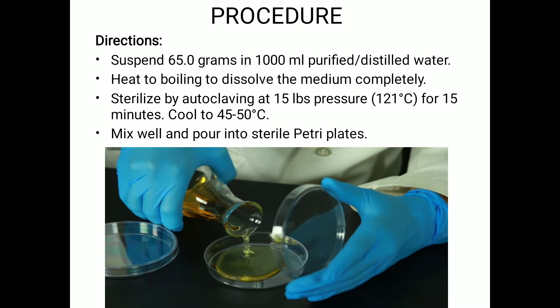We need to suspend 65 grams in 1000 ml of purified distilled water. It's not necessary to prepare exactly 1000 ml — it depends on how much we need. For example, if we need 500 ml, we prepare for 500 ml; for 100 ml, we measure accordingly. So here I'm giving the example: if we need to prepare 1000 ml, we will need 65 grams of the media.